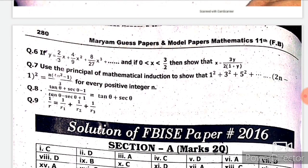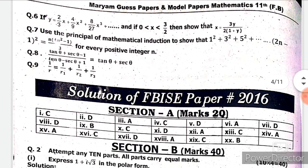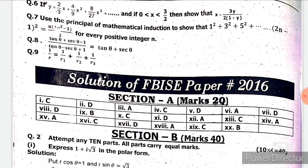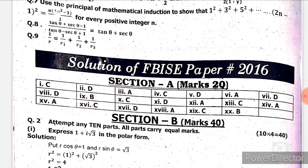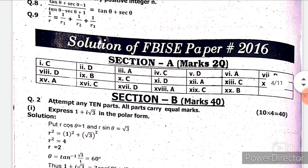Now moving towards the solution of this past paper 2016. The Section A solution is given — you can see it. Then we have Section B which contains 40 marks and we have to attempt 10 out of 14.